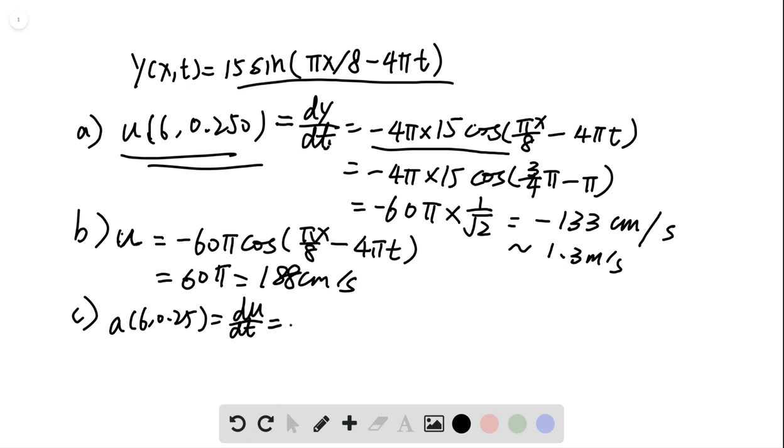So now it becomes negative 4 pi times 60 pi. And actually positive because the derivative of cosine is negative sine. So sine pi x over 8 minus 4 pi t. And there's another negative here. So yes, this is still negative sine. All right, so this is acceleration.